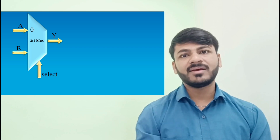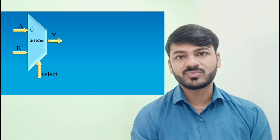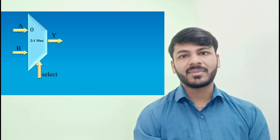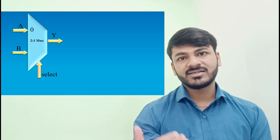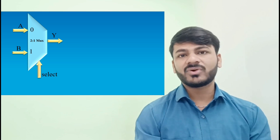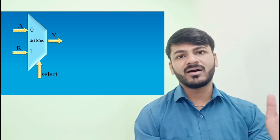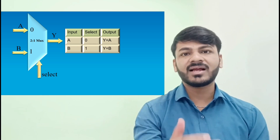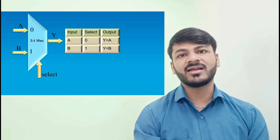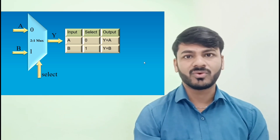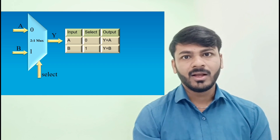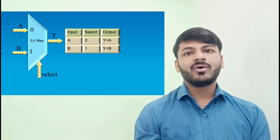Based on the select line, inputs A and B are forwarded to output Y. If the select line is zero, then input A will be routed to output Y. If the select line is one, then input B will be routed to output Y.